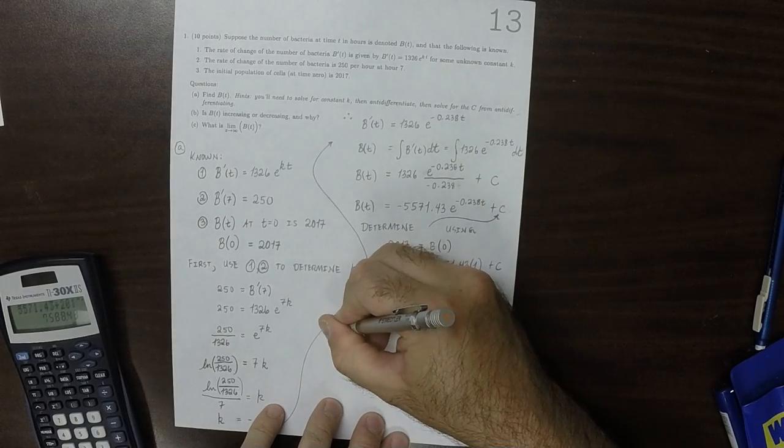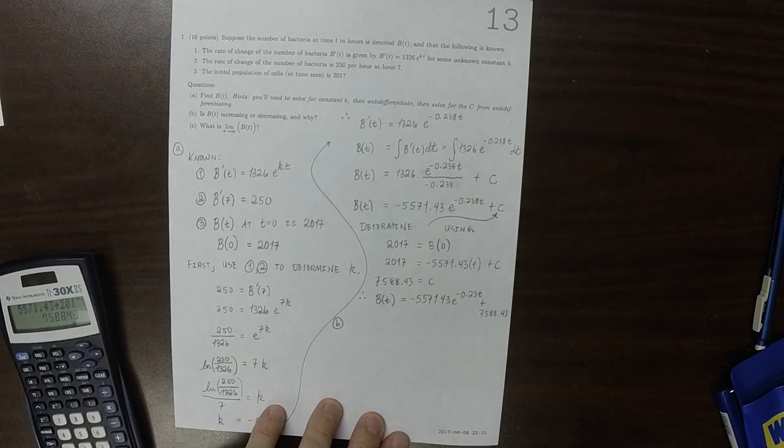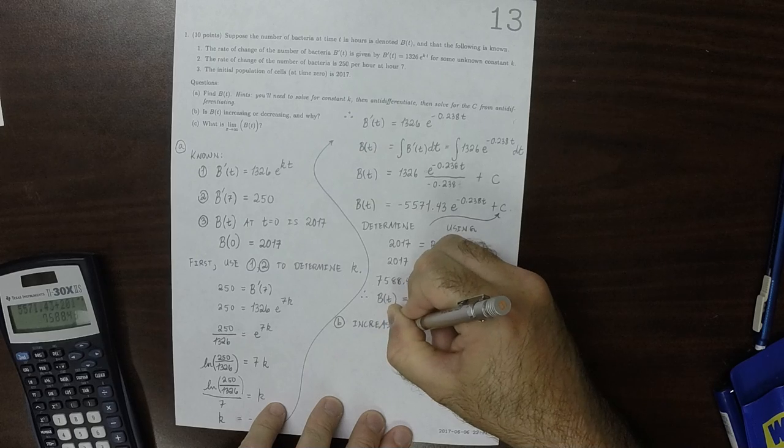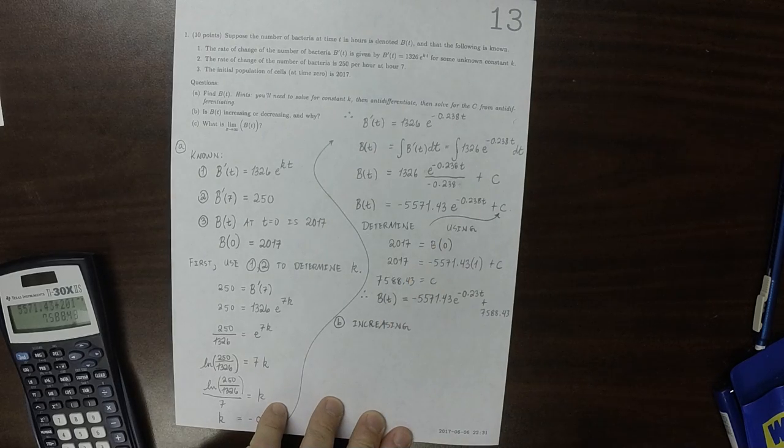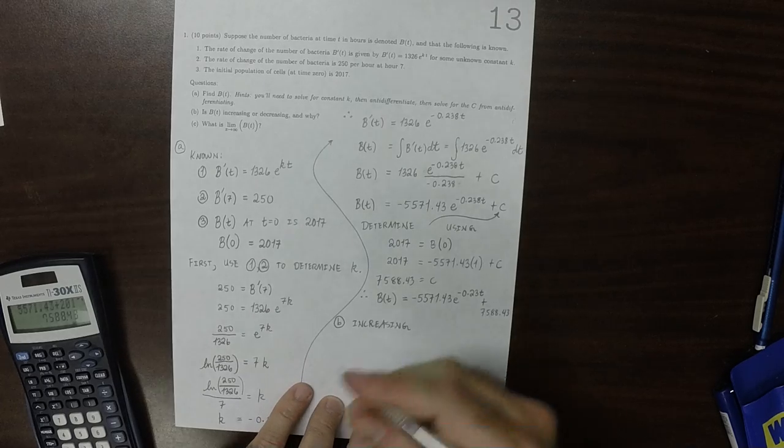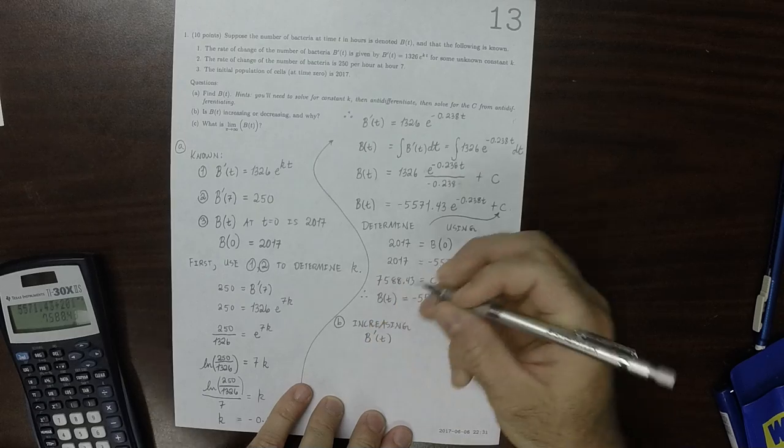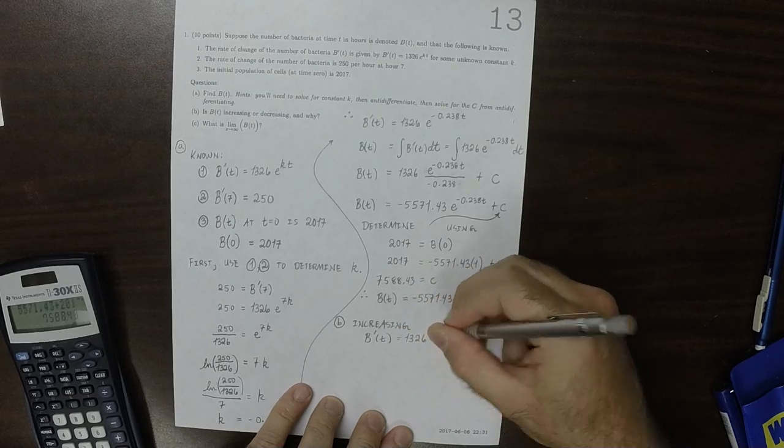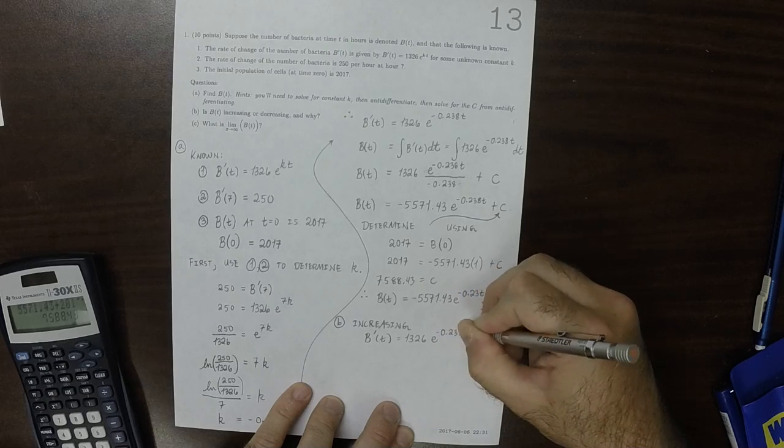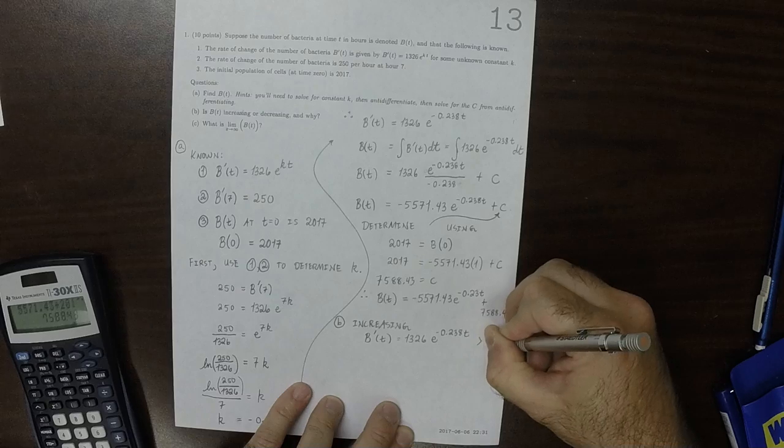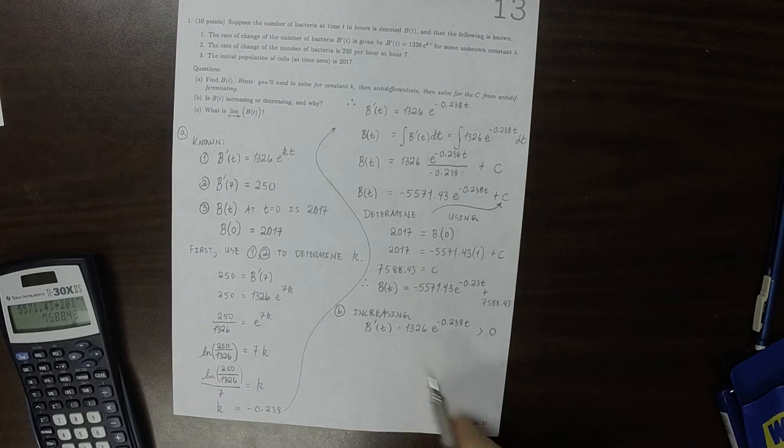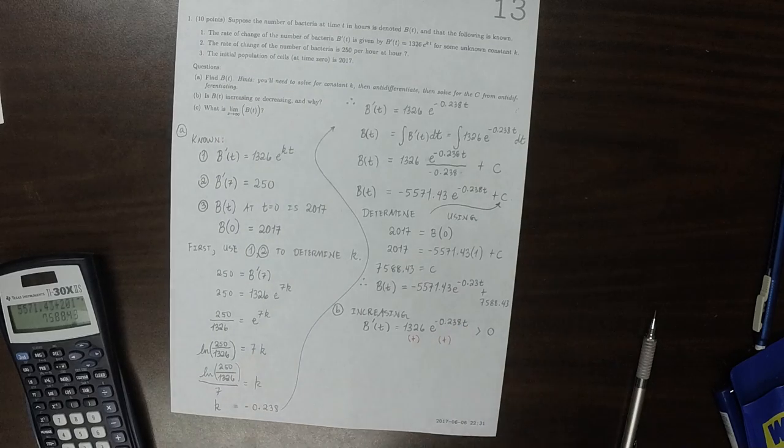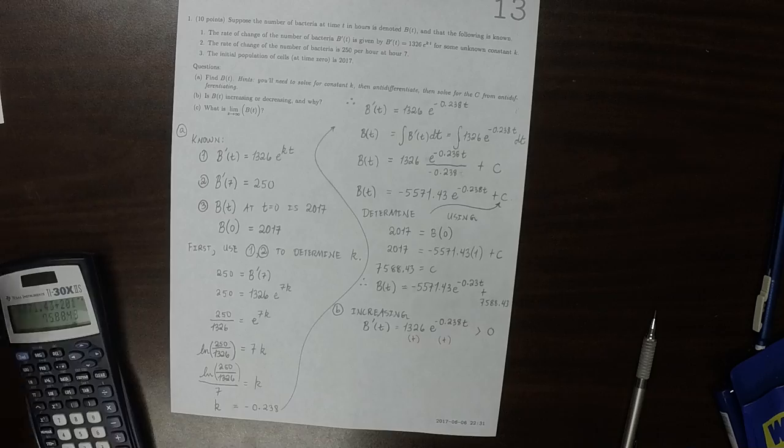For part B, the answer is that it's increasing, and the reason is actually easier than you might think, because the derivative we established at the top there is 1,326 multiplied by exponential of negative 0.238 t, and that is always positive because 1,326 is positive and exponential of anything is also positive, so the product of those two is positive. The derivative is always positive, therefore it's increasing.